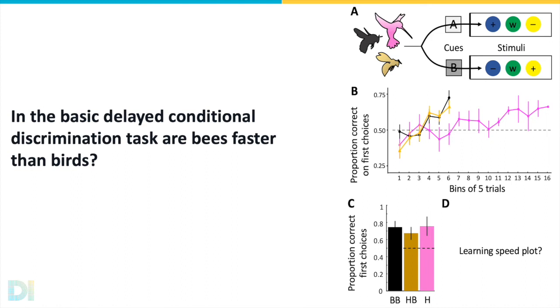Now this work is ongoing, but the data that we have so far shows that all of our species, the hummingbird data in pink, the honeybee data in gold, and the bumblebee data in black, all of them can learn this task and actually all of them learn it to a kind of similar level of performance. But the insects are acquiring the task faster than the hummingbirds.